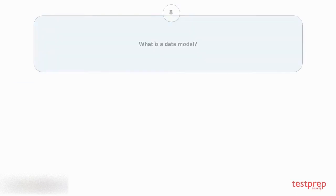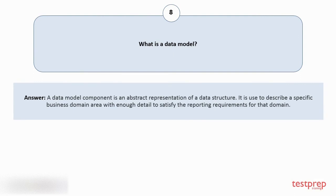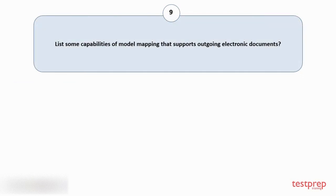Question number 8: What is a data model? A data model component is an abstract representation of a data structure. It is used to describe a specific business domain area with enough detail to satisfy the reporting requirements for the domain.